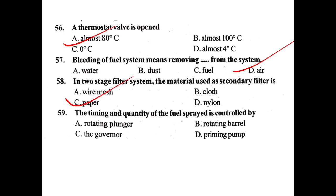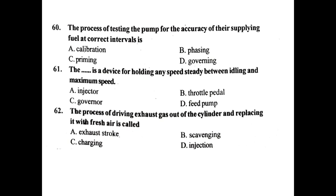The timing and quantity of fuel spray is controlled by a rotating plunger. The process of testing the pump for accuracy of supplying fuel at correct intervals is called calibration. The dash is a device for holding any speed steady between idling and maximum speed — it is a governor. The process of driving exhaust gas out of the cylinder and replacing it with fresh air is called scavenging.